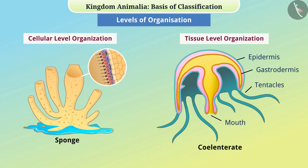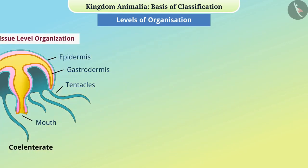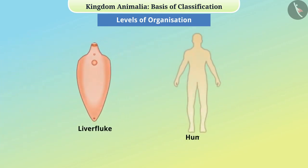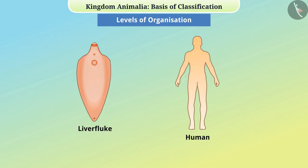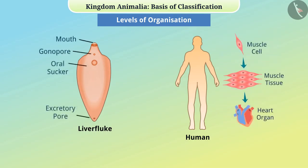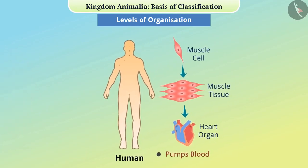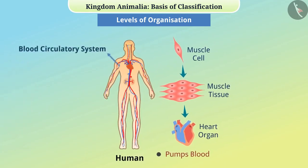In some animals, such as liver fluke and other higher associations, tissues organize and make organs, where each organ performs a specific function. In some animals, different organs together make an organ system and perform special functions in the body.